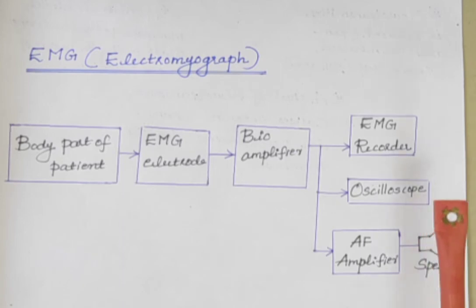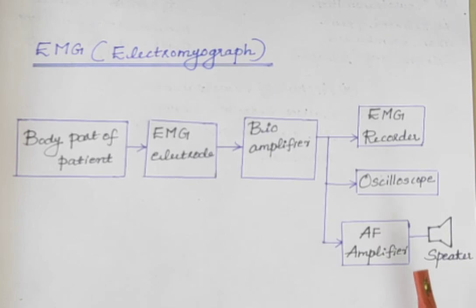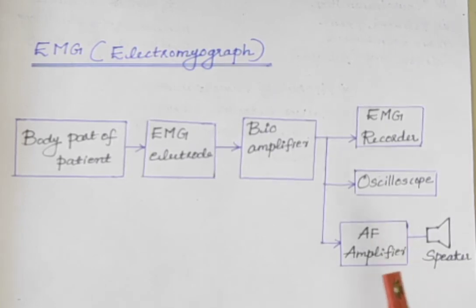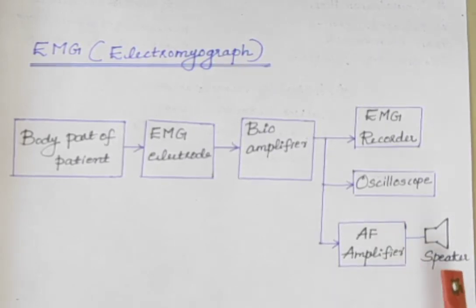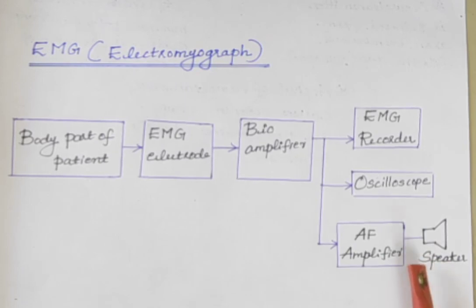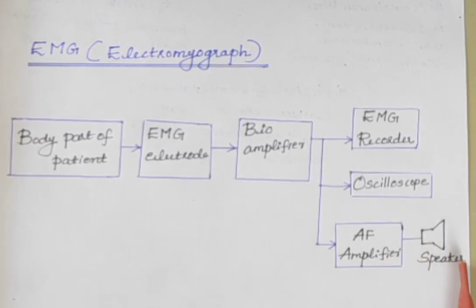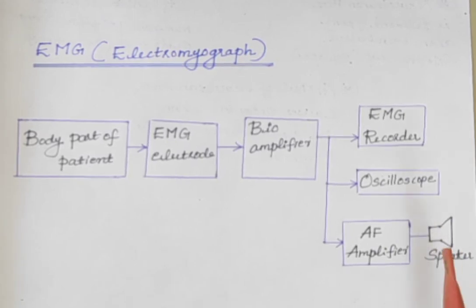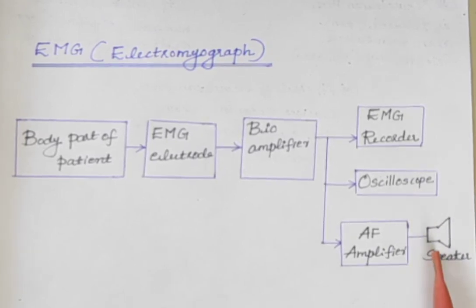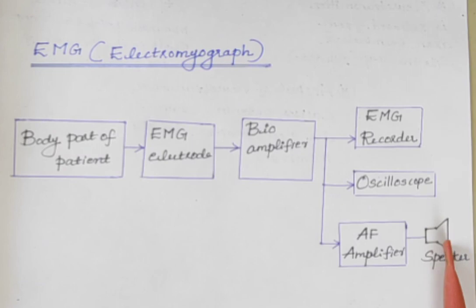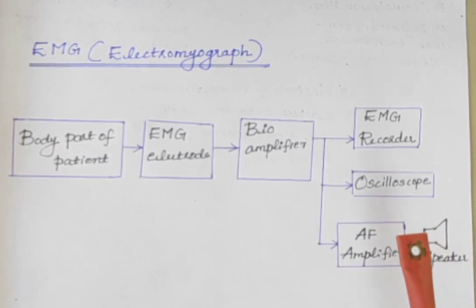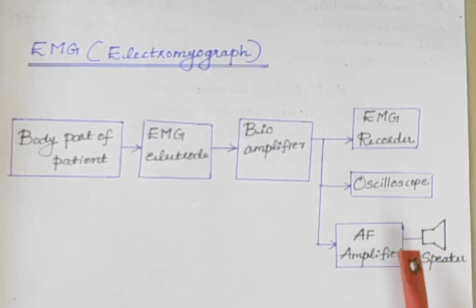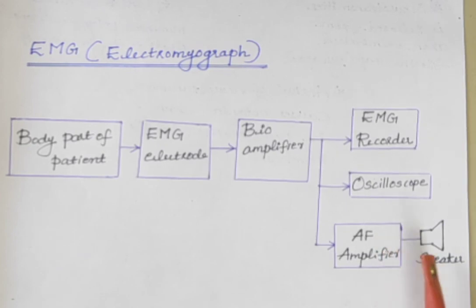Also, we can give the EMG signal to an audio frequency amplifier. Because at normal condition, the sound does not undergo any variations. But abnormal activity of muscle produces sudden change in sound. Audio frequency amplifiers are used to distinguish these sounds clearly.